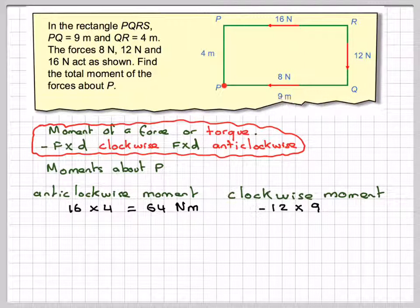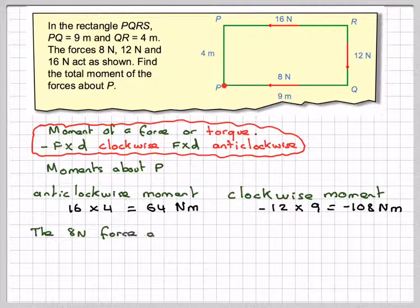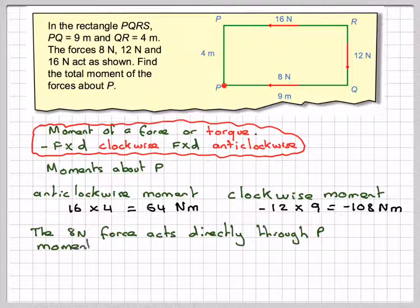Now, this 8 newton force has no distance from P, so it's acting directly through P. The 8 newton force acts directly through P, and therefore its moment will be 8 times 0, which is actually 0 newton meters.